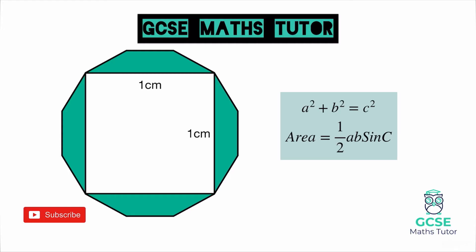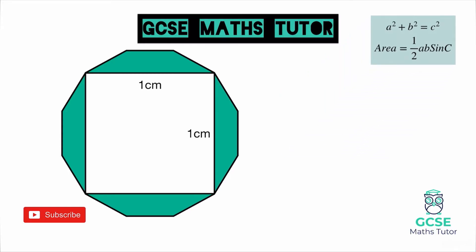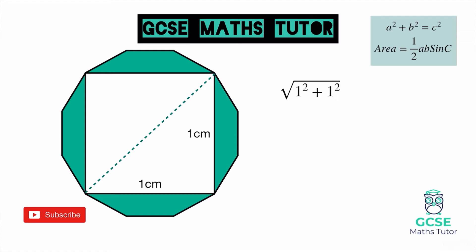Let's go through this. A good starting point is to have a look at this horizontal line, and we can use Pythagoras to work that out. Looking at the bottom right-hand triangle, we would do 1 squared plus 1 squared, then square root that to find the length of the hypotenuse. That comes out as the square root of 1 plus 1, which is the square root of 2. So the length of that hypotenuse is √2.